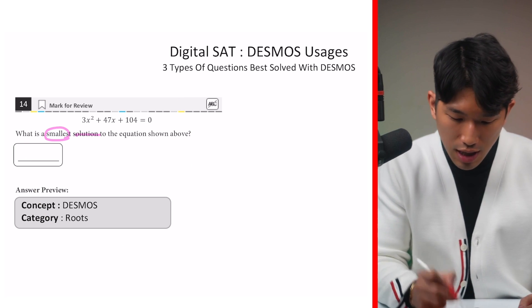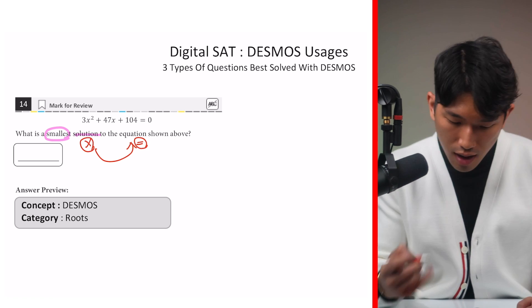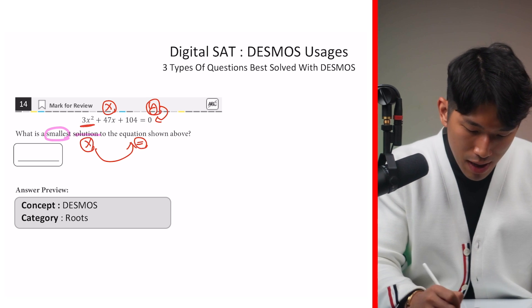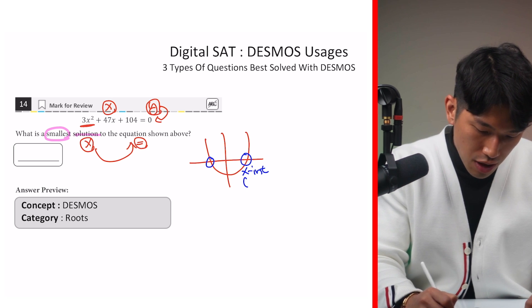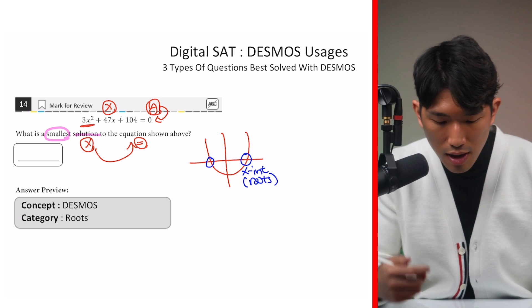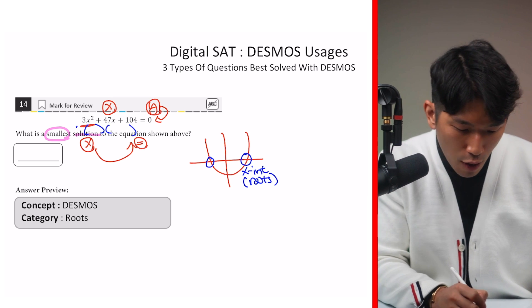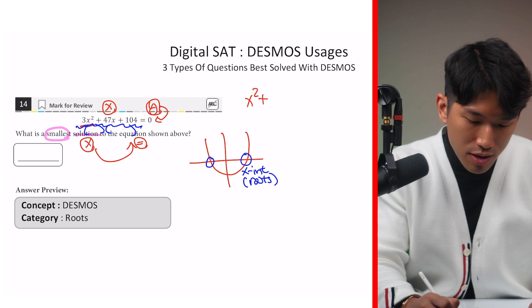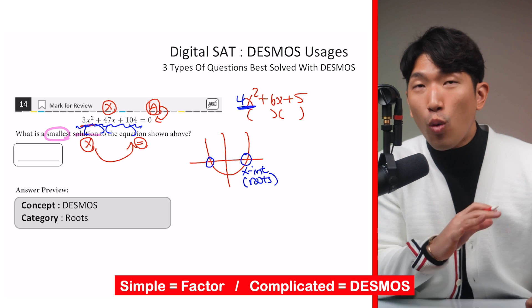So let's take a look. What is the smallest solution to the equation shown above? So on the SAT, solution is referring to the value of x that makes the equation true. And for the equation above, we're looking for value of x that makes our y value equal to 0. And when it comes to a parabola or any kind of graph, we know that the y is equal to 0 at the x-intercepts, also known as the roots for a parabola. And typically, in order for you to find out where the roots are located, you would usually just factor out this equation. But the problem is that our equation looks very, very, very complicated. When it's complicated, you don't want to do it because it's going to take a very, very long time.